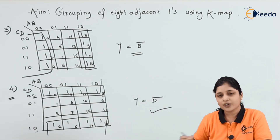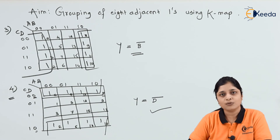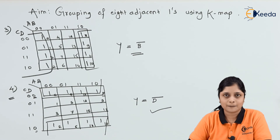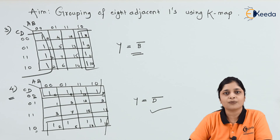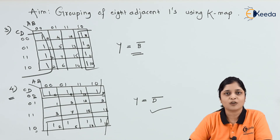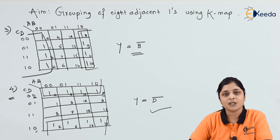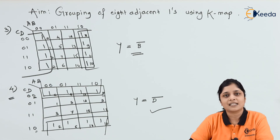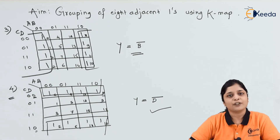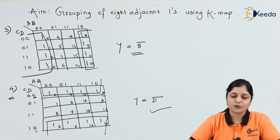So for the fourth problem, the final answer is Y = D̄. This is all about the grouping of 8 adjacent ones considering the K-map. According to the K-map rules, we got the answers in minimized form. Thank you so much for watching this video — stay tuned with Ikida and subscribe.